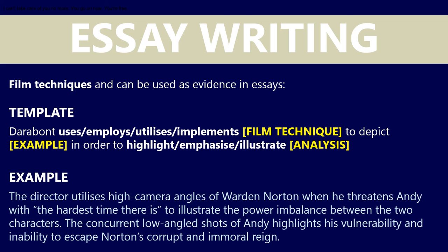Let's have a look at an example. This is from a scene we looked at earlier on: 'The director utilizes high camera angles of Warden Norton when he threatens Andy with the hardest time there is, to illustrate the power imbalance between the two characters. The concurrent low-angle camera shots of Andy highlights his vulnerability and inability to escape Norton's corrupt and immoral reign.' In this case we've actually used two film techniques — high camera angles and low-angled shots. You might want to play around with the sentence structure and bring in your own verbs. The main thing is you outline what the film technique is, depict a particular scene where it's used, and analyse how it strengthens the point, idea, or theme you're exploring in your essay.